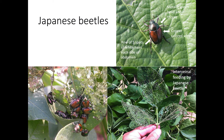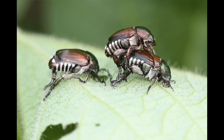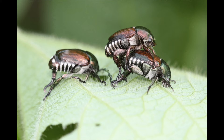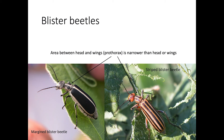Japanese beetle adults typically emerge from late May through July and often feed in small clusters. They feed primarily on the upper foliage of soybean, eating the leaf tissue between the leaf veins and leaving a lace-like skeleton.